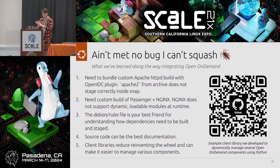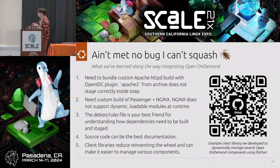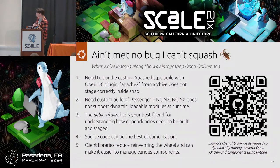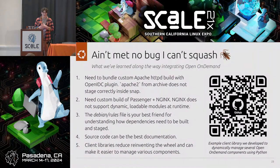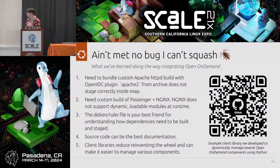There have been quite a few lessons learned. I've been working on this since we released Mantic Minotaur back in November. First lesson: we needed to bundle a custom Apache with mod_auth_openidc inside the snap — similar to how the NextCloud snap ships its own Apache instance. The challenge is that Apache from the archive does not stage correctly using Snapcraft, so we have to build it ourselves and also add the OpenIDC plugin so Open On Demand is happy when users log in.